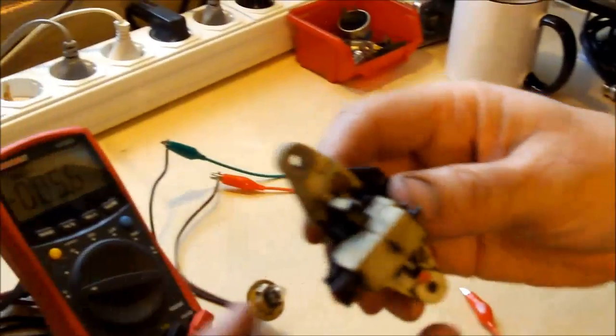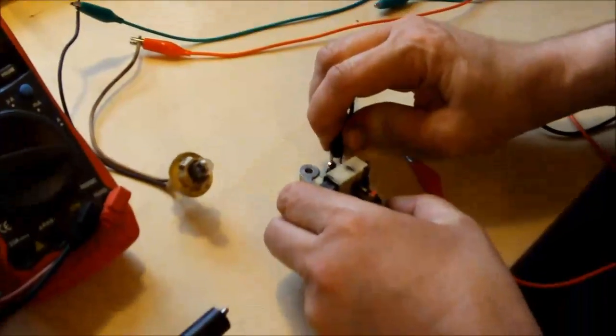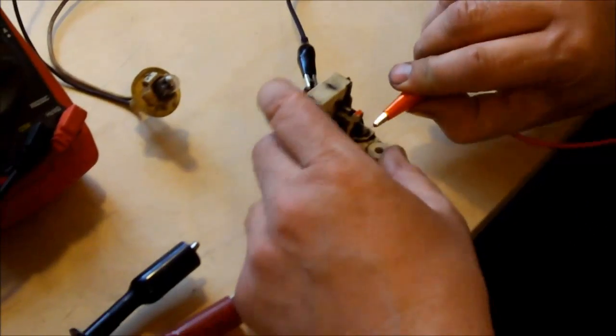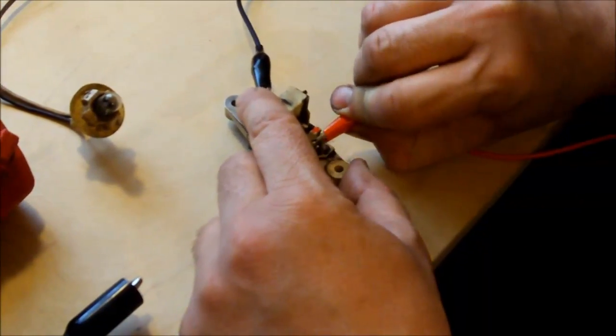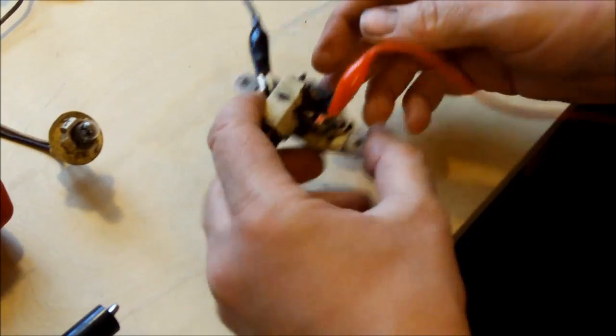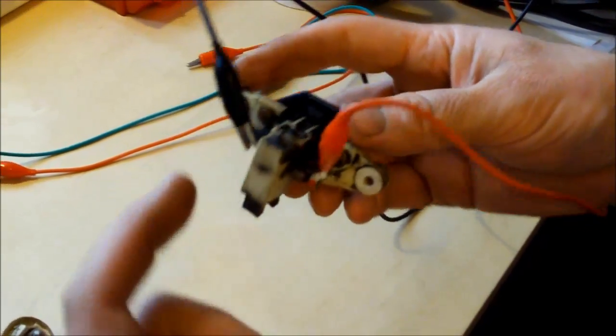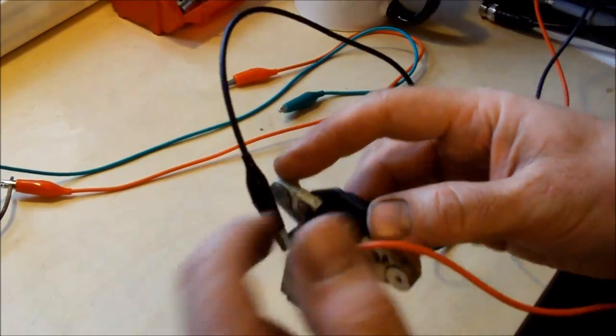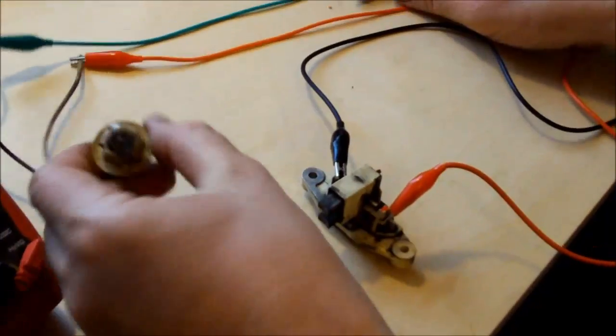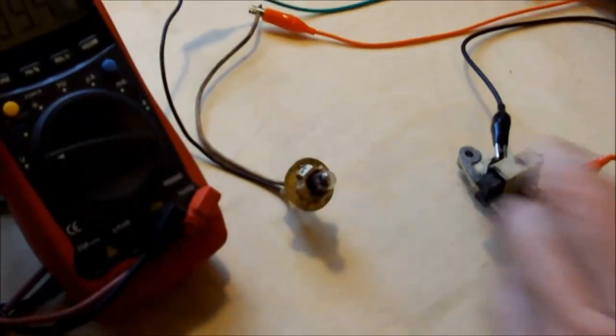Now I'm going to connect ground and plus 12 volt here and I'm going to connect the carbon brushes to a simple 12 volt bulb.